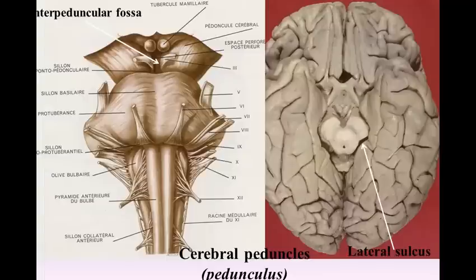The medial surface of the peduncle forms a lateral boundary of the interpeduncular fossa and is marked by a longitudinal furrow, the oculomotor sulcus, from which the roots of the oculomotor nerve emerge. On the lateral surface of each peduncle there is a second longitudinal furrow termed a lateral sulcus. The fibers of the lateral lemniscus come to the surface in this sulcus and pass backward and upward to disappear under the inferior colliculus.